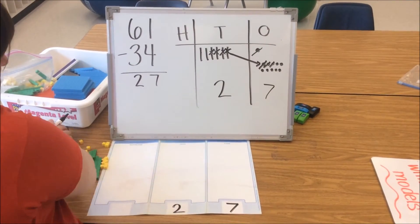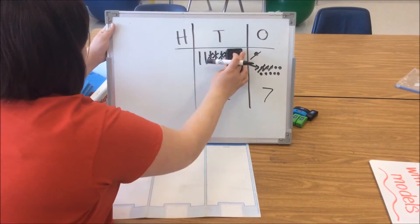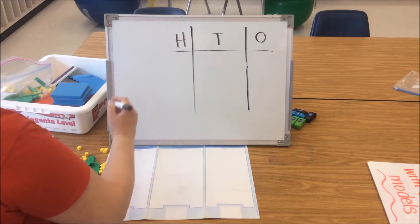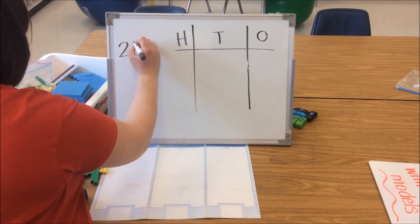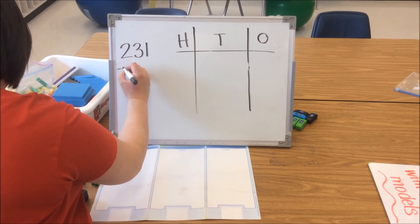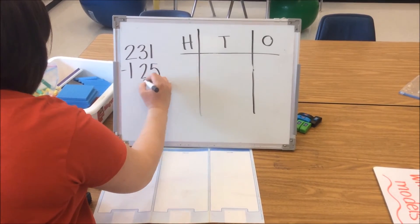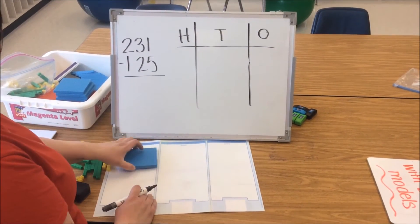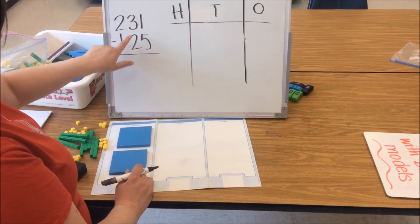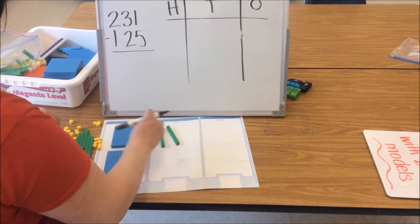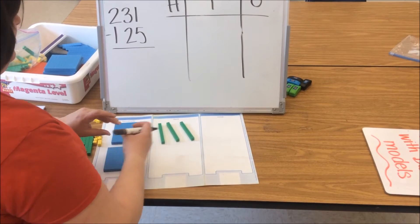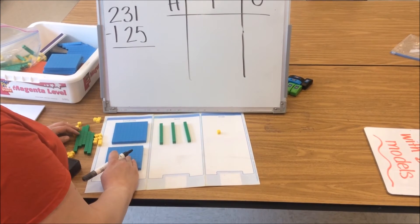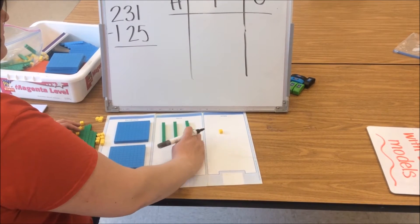Let's try a harder number — we're going to try a number now in the 100s. We are going to start with 231 minus 125. So I'm going to first model 231 by making 2 hundreds, 3 tens, and 1 one. Let's go ahead and count that: 100, 200, 210, 220, 230, 231.